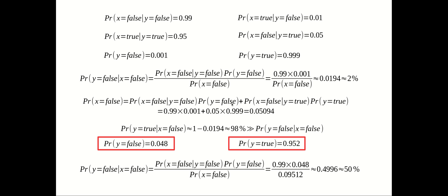We can stick some numbers in: 0.99 times 0.001, plus P(X=false | Y=true) which is 0.05 — that's the case where the person is telling the truth but the polygraph says they are lying — multiplied by the prior that the person is truthful, which is 0.999. The denominator has a value of 0.05094.